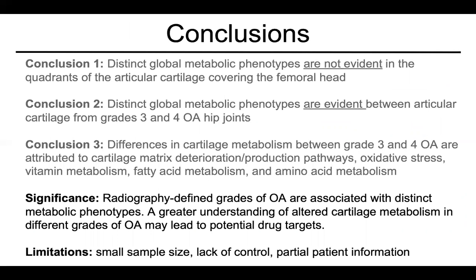To our knowledge, this is the first study to generate LC-based global metabolic profiles of OA articular cartilage. We generated global metabolic profiles from donors with radiography-confirmed grades 3 and 4 OA, identifying a number of metabolic pathways distinct between grades, many overlapping with previous studies on altered metabolism in OA pathogenesis. The results suggest that radiography-confirmed grades 3 and 4 cartilage are associated with distinct metabolic shifts. A greater understanding of altered cartilage metabolism in OA may lead to potential drug targets to slow, halt, or reverse cartilage damage. Future studies will increase sample size, incorporate additional patient clinical information, score cartilage severity by histological analysis, and include grades 1, 2, and healthy cartilage for comparison.